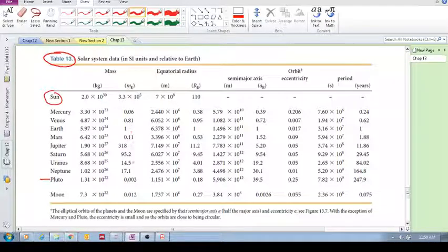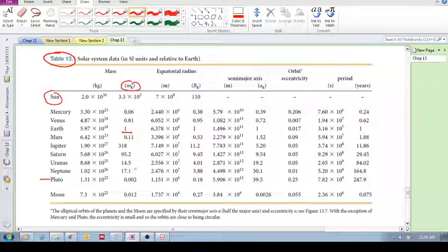And then over here, everything is in relation to the mass of the earth. So the mass of the earth is one, and then you've got the masses of all these objects, all these planets or the sun, in relation to the earth.